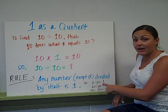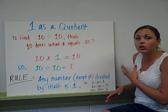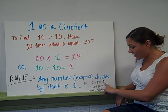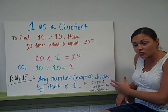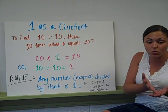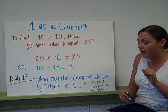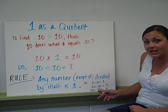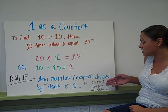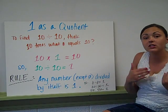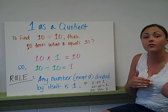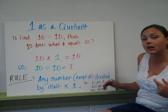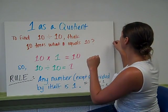8 divided by 8 is 1 — 8 can only go into 8 one time. 20 divided by 20 is 1 — 20 can only fit into 20 one time. 510 divided by 510 is 1 — it can only fit into itself one full time. So any number divided by itself is 1. That's the second rule.